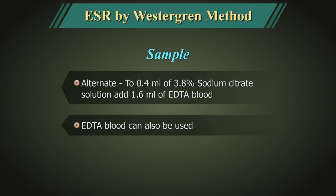Draw venous blood and immediately place 1.6 ml into the trisodium citrate solution. Note: You can also use EDTA blood. If kept at 4 degrees centigrade, it can be used up to 24 hours. In this case, mix the EDTA blood well and place 1.6 ml into the trisodium citrate solution.